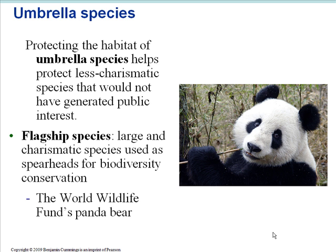In conservation, we also see the ideas of umbrella species and flagship species. Umbrella species serve as an umbrella that protects whole habitats. Often it's a larger animal — if you protect that animal, like the tiger, it also protects all sorts of other less charismatic but still important organisms. Flagship species, like the panda bear, are charismatic species used to appeal to the public and spearhead biodiversity conservation. The most famous example is the World Wildlife Fund's Panda Bear.